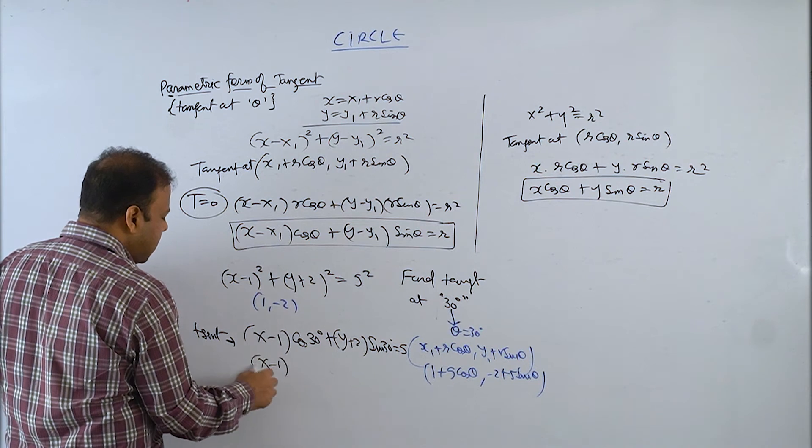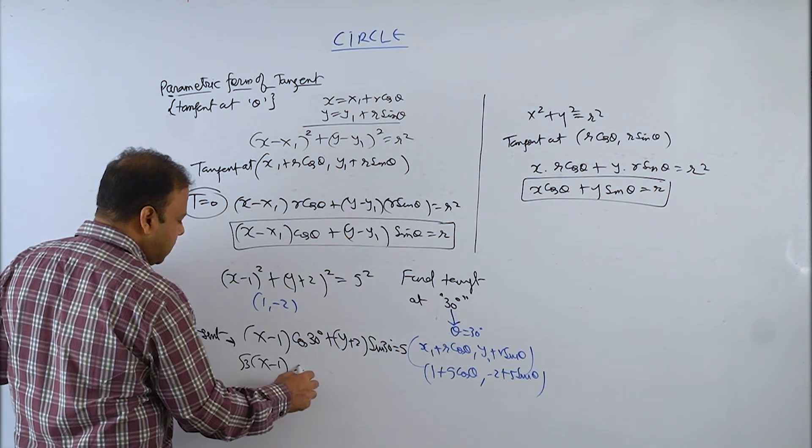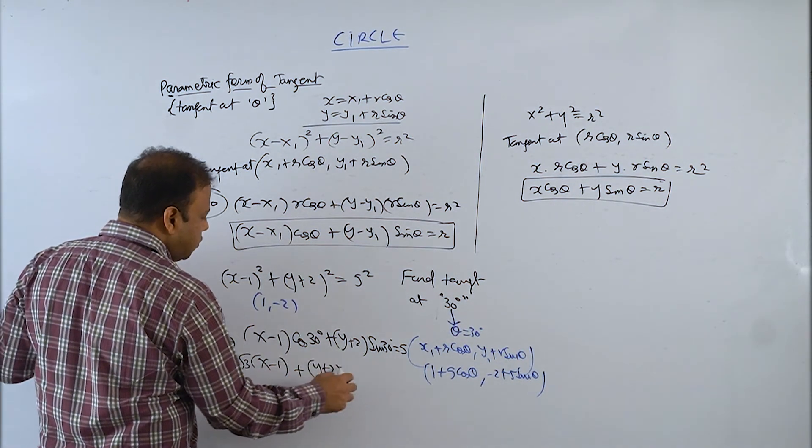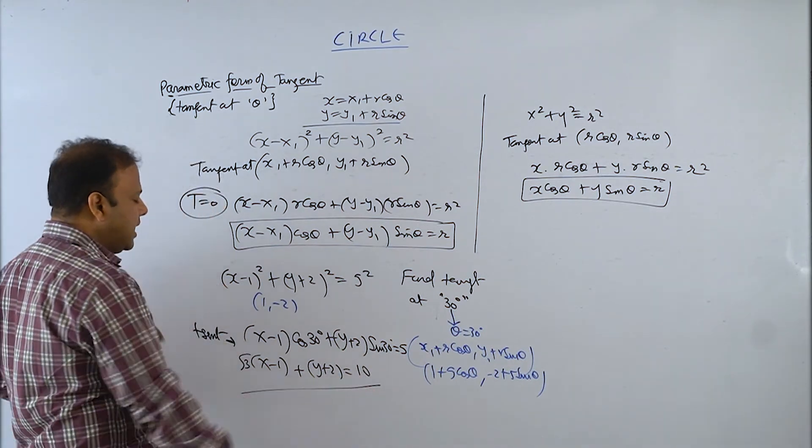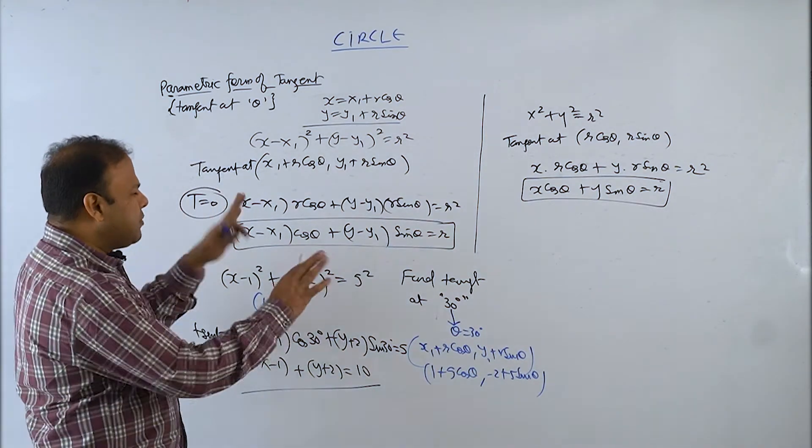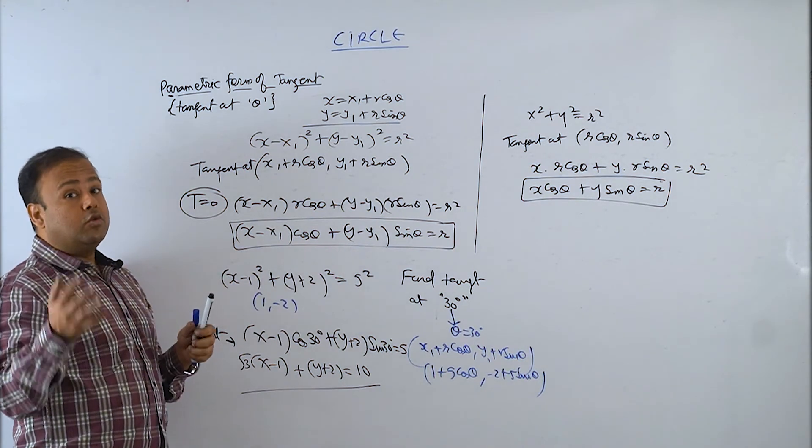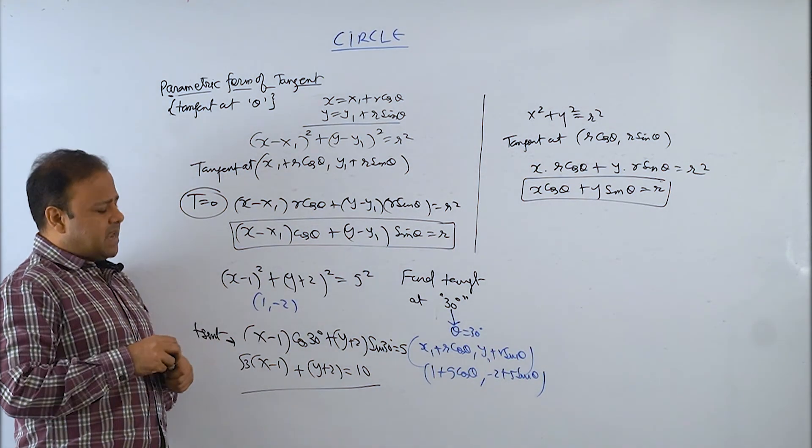So that is x minus 1 times root 3 by 2, y plus 2 times 1 by 2. Multiply by 2, it becomes 10. Whatever you need to simplify. We can simplify according to the options given and find the answer.